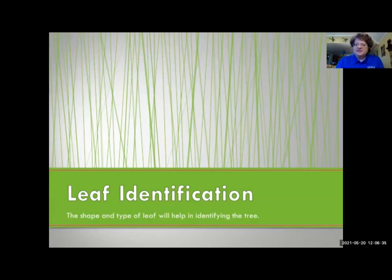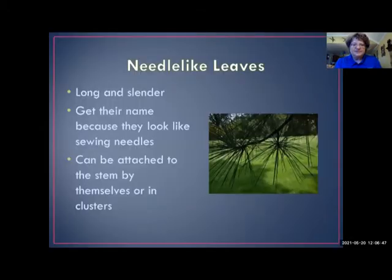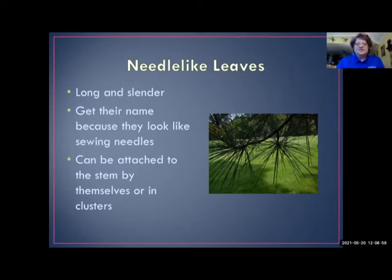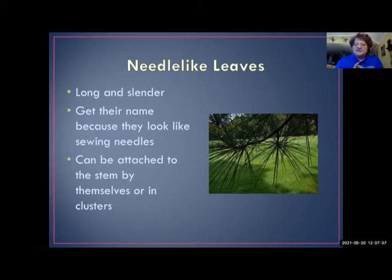The first thing any ID book will look at is leaf identification — the shape and type of leaf is going to help you identify a tree. The first question they'll usually ask is: is it a needle-like leaf? Needle-like leaves are long and slender, getting their name because they look like sewing needles, and they can be attached to the stem by themselves or in clusters.